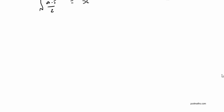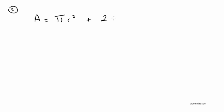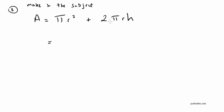A much more challenging example now — let's call this example number 3. The formula is A equals pi r squared plus 2 pi r h. We're going to make h the subject. The h is being multiplied by 2 pi r — that is, 2 times pi times r times h — and it's being added to by pi r squared.